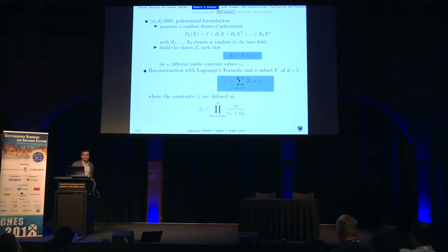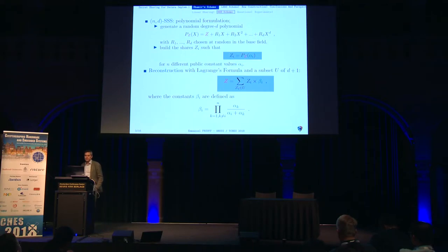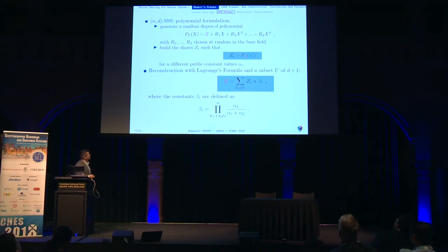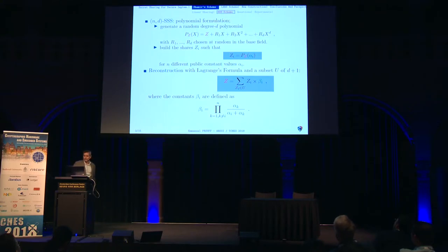Once you have the sharing, how do you reconstruct Z? It's a simple Lagrange interpolation formula. You choose a subset of D plus one shares — you don't need all N shares. You just need D plus one of them, and then you perform the interpolation formula which gives Z, where the coefficients beta_i in the formula are extracted from the public points alpha_i.